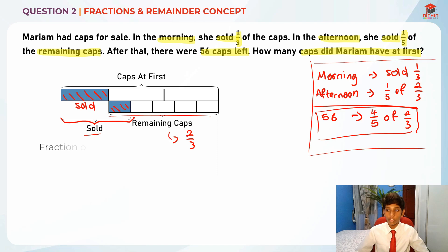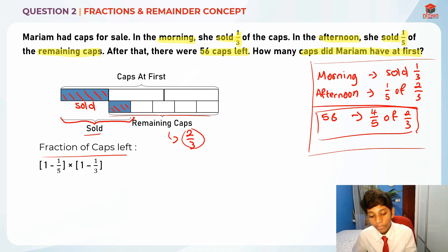Let's do this question. Fraction of the caps left, what is the fraction of the caps left is actually two thirds. We're going to find out the fraction of the caps left. One minus one over five is four over five, and one minus one over three is two over three. We take four over five times two over three to find what is the fraction left for 56 caps.